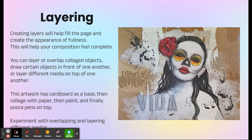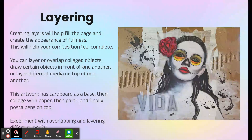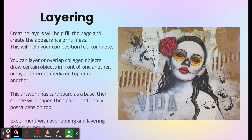Another important thing with visual journaling is layering. Creating layers helps create the appearance of fullness on a page and helps things feel complete. You can achieve this by layering collage objects over one another, drawing objects in front of one another — they create a background, middle ground, and foreground. For example, one artwork has cardboard as a base with sections removed to reveal inner markings, then pictures of books collaged on top, then paint, then splatter paint. So there are many different layers that help it feel whole and complete.